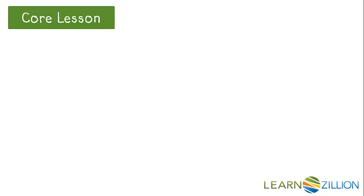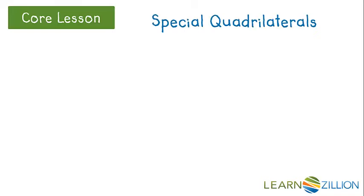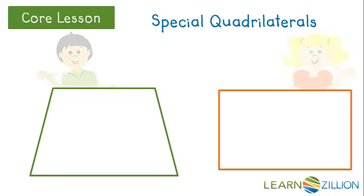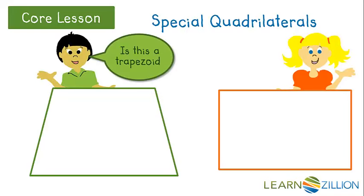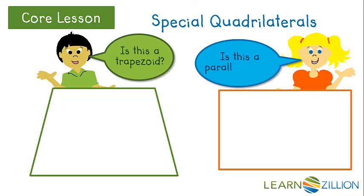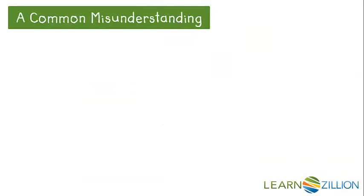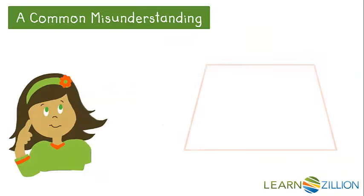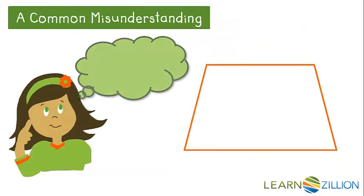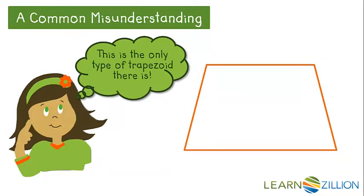We are going to take a close look at two special quadrilaterals: trapezoids and parallelograms. A common misunderstanding is that trapezoids can only look like the outline of a lampshade.